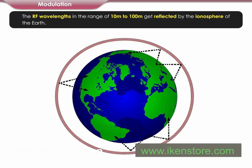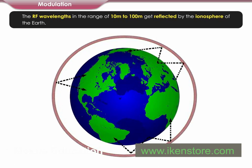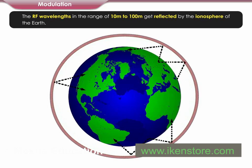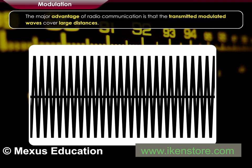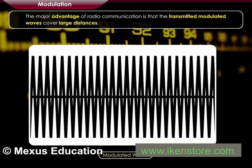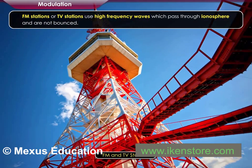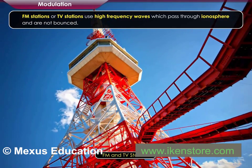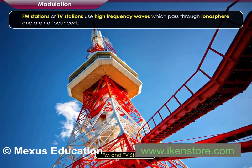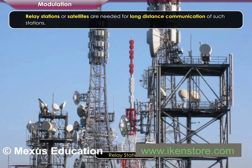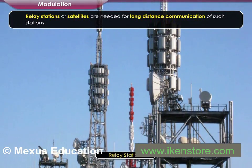The RF wavelengths in the range of 10 meters to 100 meters get reflected by the ionosphere of the Earth. The major advantage of radio communication is that the transmitted modulated waves cover large distances. FM stations or TV stations use high frequency waves which pass through the ionosphere and are not bounced back. Relay stations or satellites are needed for long distance communication of such stations.